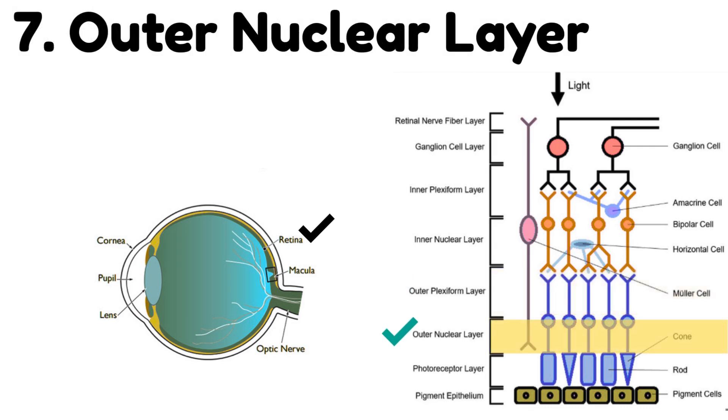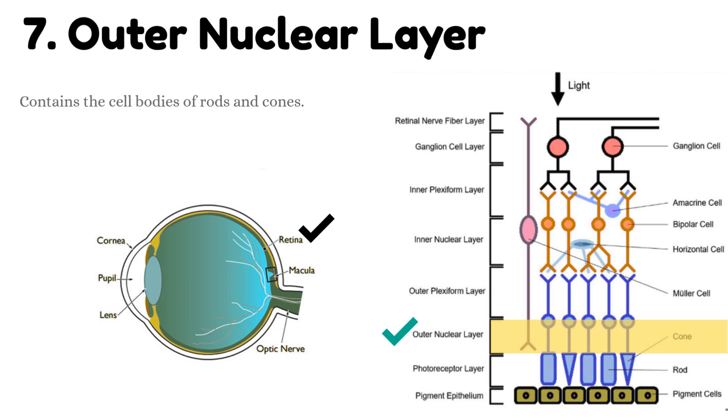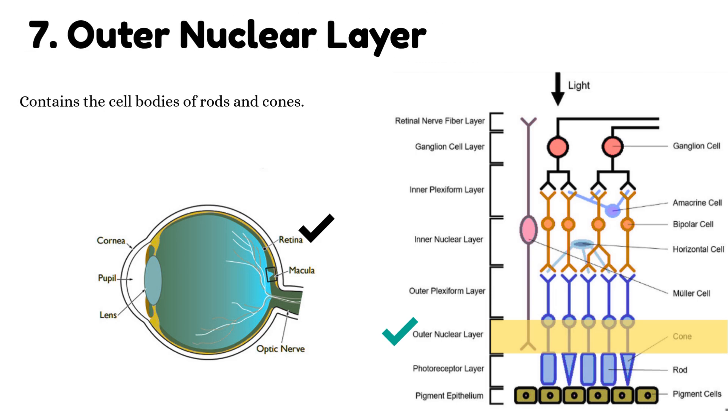Number 7: Outer nuclear layer. This layer contains the cell bodies of rods and cones.